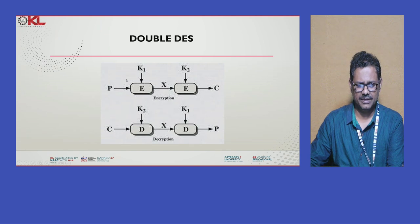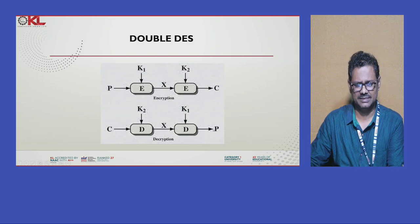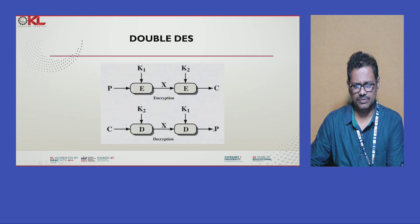On the plain text we are applying two keys: K1 then K2. For decryption, the reverse order is used. First, take the cipher text, apply K2, get intermediate product X, then by using K1, that is decrypted to get the plain text. This is double DES — using two keys for encryption and two keys for decryption. Encryption order is K1, K2; decryption order is K2, K1.